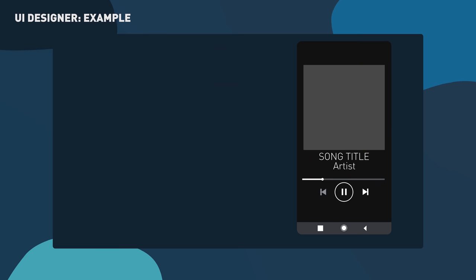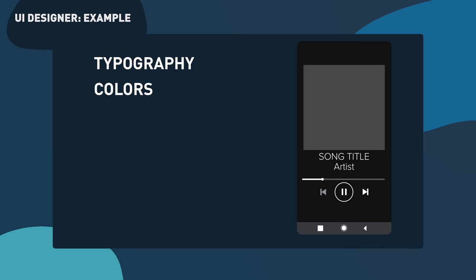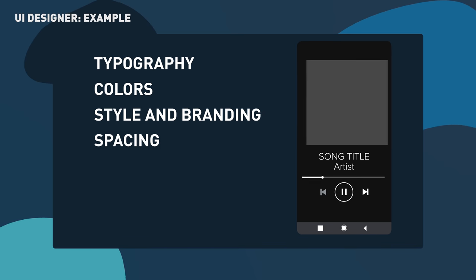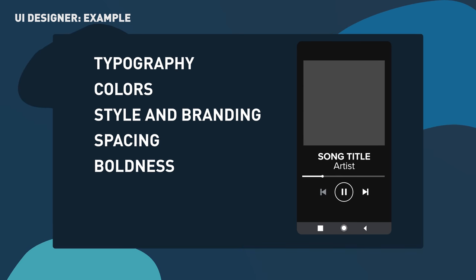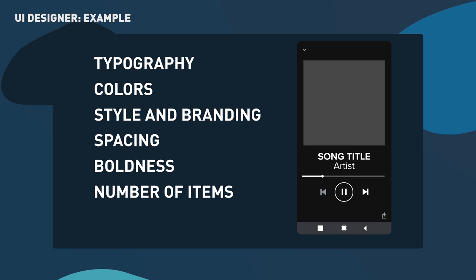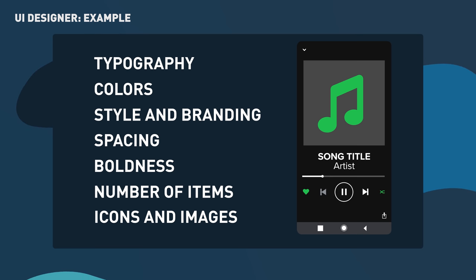Looking at this Spotify example, we can clearly list the kinds of things that a UI designer actually does: the typography, the lettering, the colours, the general style and branding, the space between items, the boldness and strength of some items over others to give them importance and hierarchy, the number of things on the screen to make it easier to understand, and the icons and images carefully placed to give meaning to what the user is doing. All of these things are the job of the UI designer.